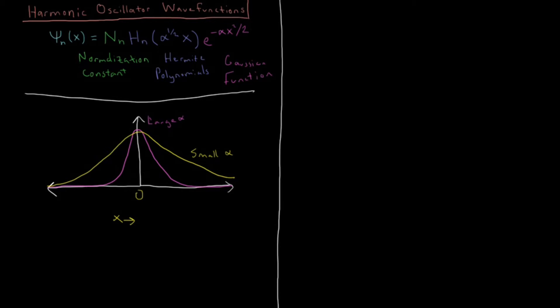So this alpha is going to take on a very specific value. And that value is the square root of k, the spring constant in the quadratic potential, 1 half kx squared, times mu, the reduced mass of both of the atoms that are forming the bond in the diatomic molecule of interest. And this divided by h-bar, the reduced Planck's constant.